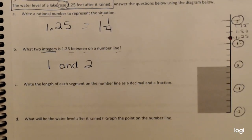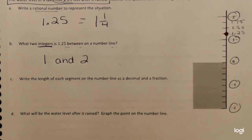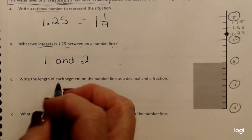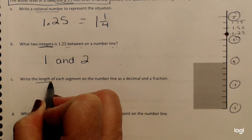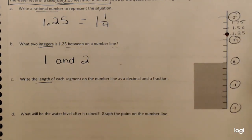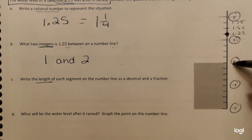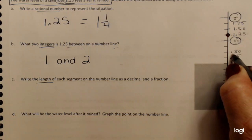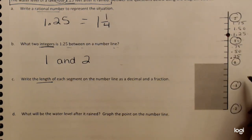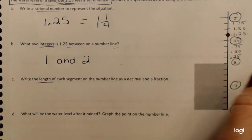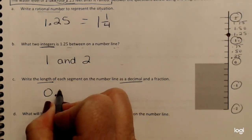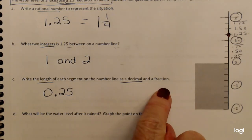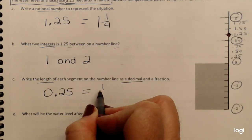Next: what is the length of each segment on the number line as a decimal and a fraction? When talking about length, that's our scale — what are we counting by? We're not counting by 1s; we're counting by a rational number. We know we're counting by quarters: 0.25, 0.50, 0.75, then 1. So the scale is 0.25 as a decimal, or one-fourth as a fraction.